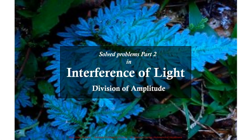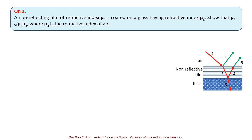Good day students. Today we shall look into a few solved problems in interference of light by division of amplitude. The first question: a non-reflecting film of refractive index μF is coated on a glass having refractive index μG. Show that μF is equal to the square root of μG times μA, where μA is the refractive index of air. The question is how we calculate the refractive index of the non-reflecting film which is coated as an anti-reflecting layer upon a glass surface.